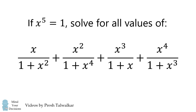The first fraction is x divided by 1 plus x squared. The second fraction is x squared divided by 1 plus x to the power of 4. The third fraction is x cubed divided by 1 plus x. And the last fraction is x to the power of 4 divided by 1 plus x cubed.